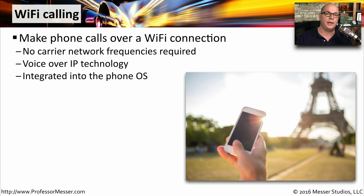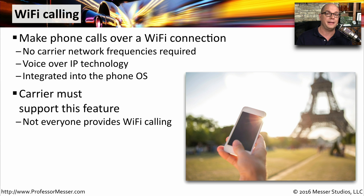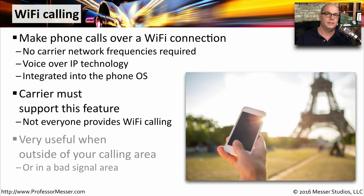With Wi-Fi calling, we can use our mobile devices to make calls over a Wi-Fi connection instead of using a traditional cellular phone company's frequencies. This uses voice over IP technology, and it's usually integrated into the phone's operating system. To be able to use this capability, it has to be a feature enabled by your carrier. Not every carrier is going to support Wi-Fi calling. This becomes very useful if you're outside of your calling area, or you're in an area where there's a bad cellular signal. You can instead connect to a Wi-Fi network and make phone calls as normal.